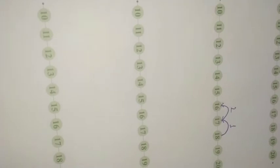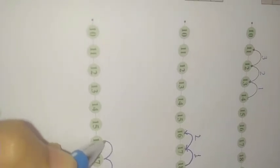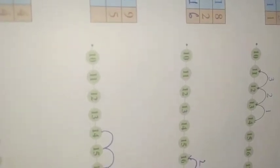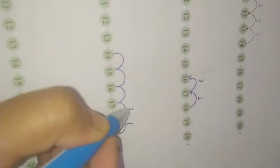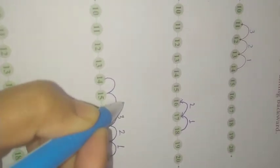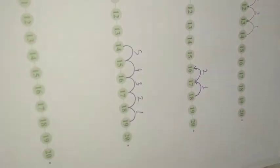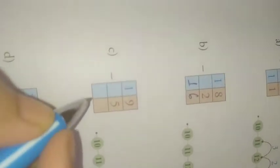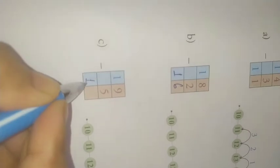Now 19 minus 5. You have to start from 19 and count backward 5 numbers. 1, 2, 3, 4, 5. So which number you reach? 14. Means 19 minus 5 equals 14. Correct.